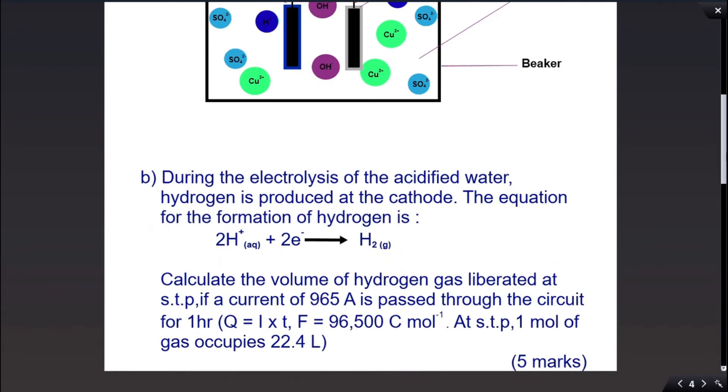Part B of the question says during the electrolysis of the acidified water, hydrogen is produced at the cathode. The equation for the formation of hydrogen is 2H+ (aq) + 2e- → H2 (g). They want you to calculate the volume of hydrogen gas liberated at STP (standard temperature and pressure) if a current of 965 amperes is passed through the circuit for one hour.